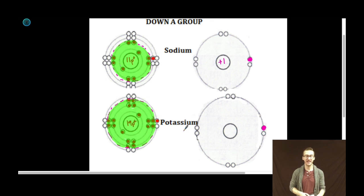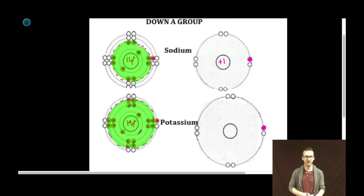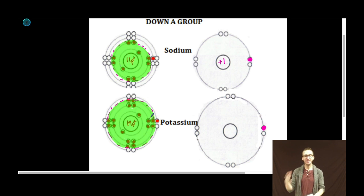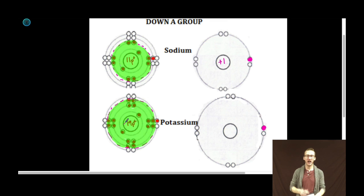Let's do the same thing with potassium. There are 19 positive protons in its nucleus and 18 negative electrons in the inner core. So 19 positive protons, 18 negative electrons, which means that the effective core charge of everything highlighted here in green is going to be plus one.